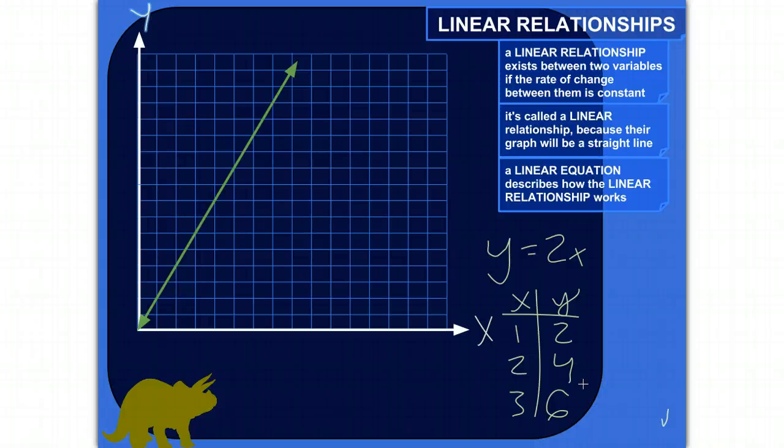Alright, so a linear relationship exists between two variables, like x and y, if the rate of change between them is constant.